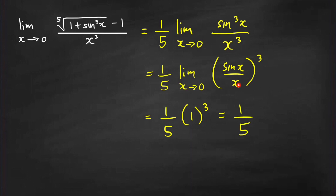In case you forgot the limit of sin x over x as x approaches 0, you may apply L'Hôpital's rule. It becomes the limit of cos x over 1 as x approaches 0, which is just equal to 1. Therefore, the limit is equal to 1 fifth.